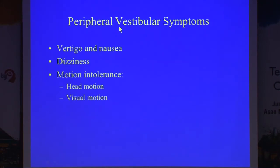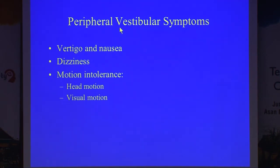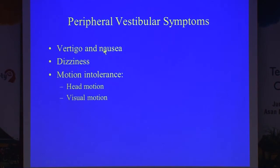So how can visual motion sensitivity or visually induced dizziness develop in patients with peripheral vestibular symptoms? Let me take you back through the history of what happens when you have, say, vestibular neuritis. You will have vertigo, vomiting, and nausea for two or three days — you'll be really wrecked. And then you may have dizziness for two or three months.